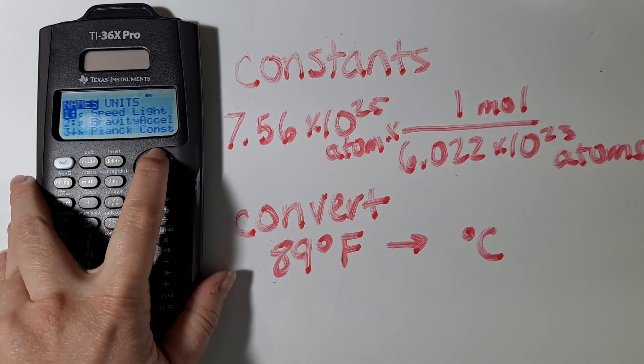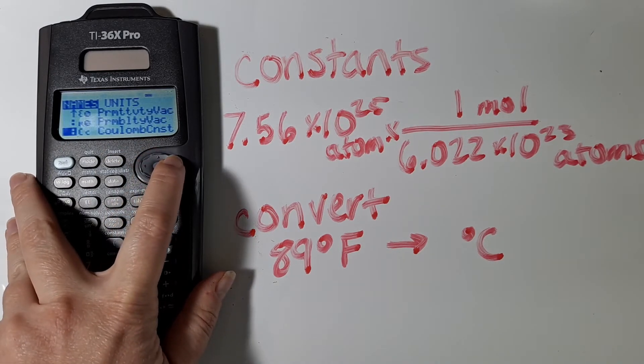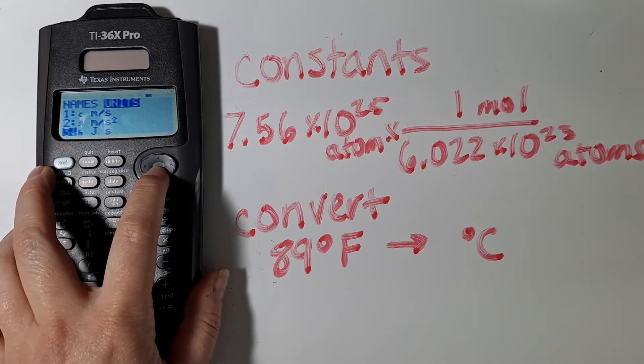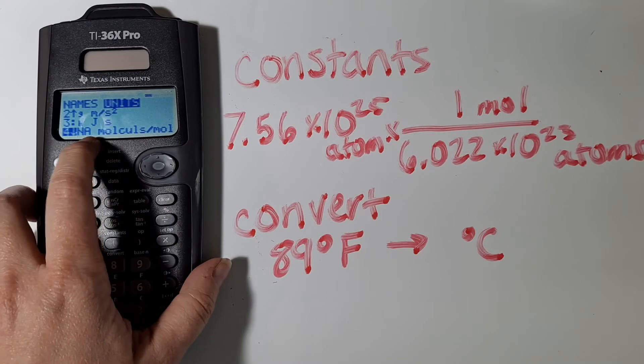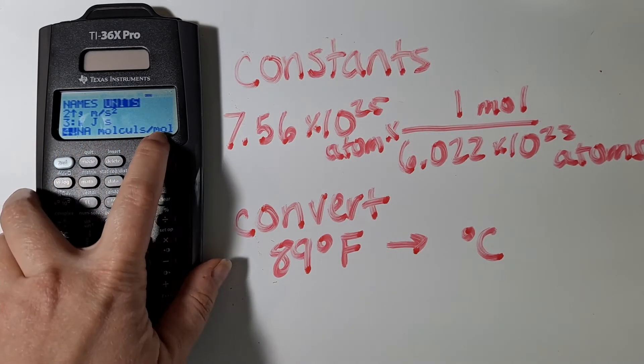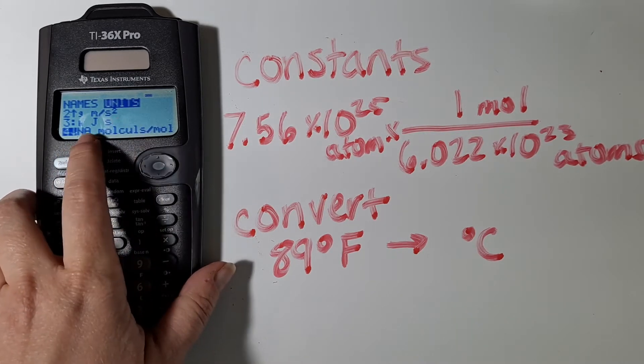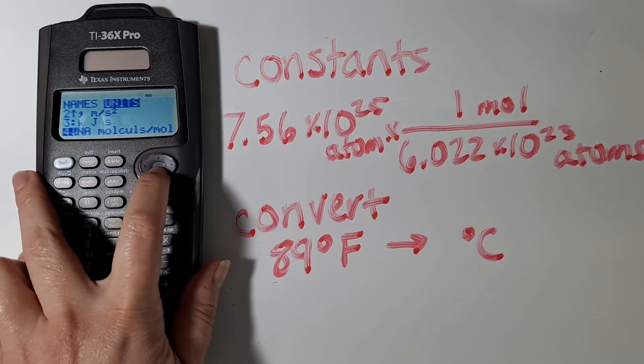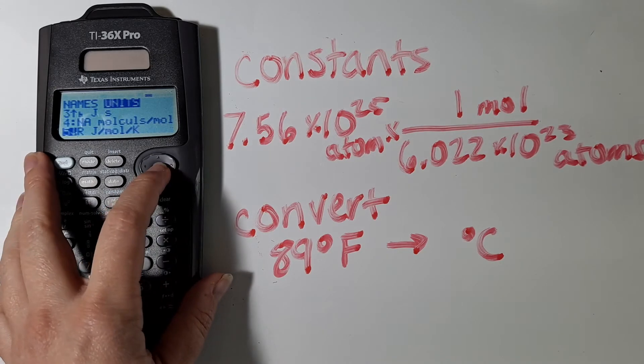If I don't remember the name of the constant I'm looking for, I can also search by units. And so if I go down here to number 4, I can see that Avogadro's number is stored as molecules per mole. This is also a good way of searching for units that you're not sure which units the calculator knows them in.